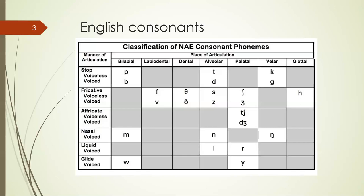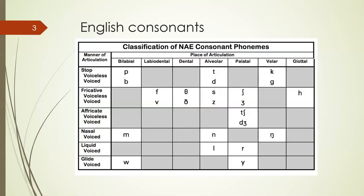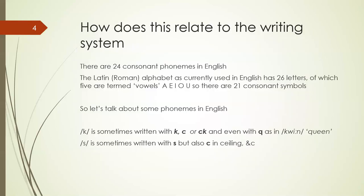The issue I really want to talk about is how this matches with writing. You'll notice that for a significant number of English consonants, the IPA script has to write something different from an English letter. For example, the dental fricatives 'th' (voiced and voiceless), and the palatal fricatives sh and zh — these can't be written with single letters in the Roman alphabet. There are 24 consonant phonemes in English, and the Latin/Roman alphabet has 26 letters, but five of those are termed vowels, leaving 21 consonant symbols for 24 consonant sounds.